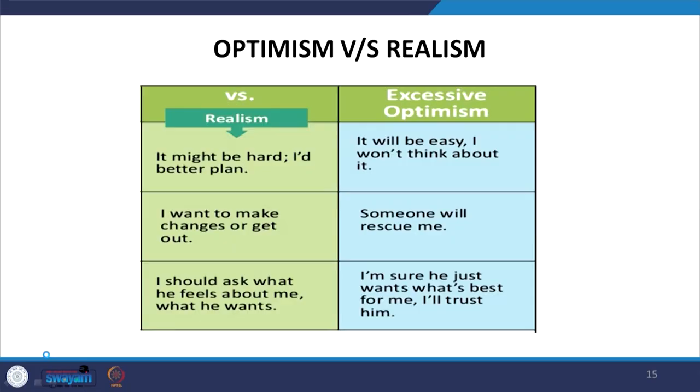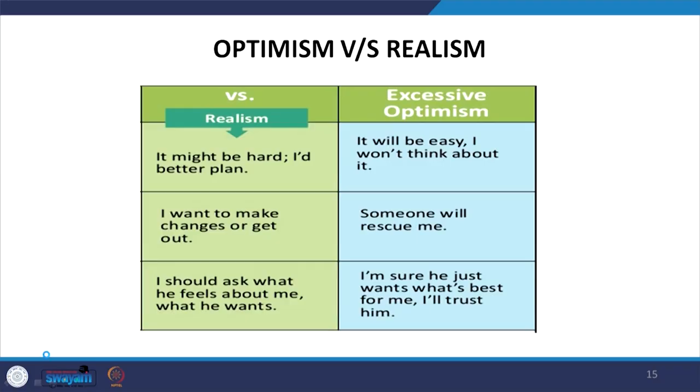The difference between optimism and realism: optimism might say 'it will be easy, I would not think about it,' while realism says 'it might be possible it will be tough and I should better plan.' With realism, if something is going wrong, I should make changes or get out of that problem or trouble — I must make changes and get out from the particular issue.